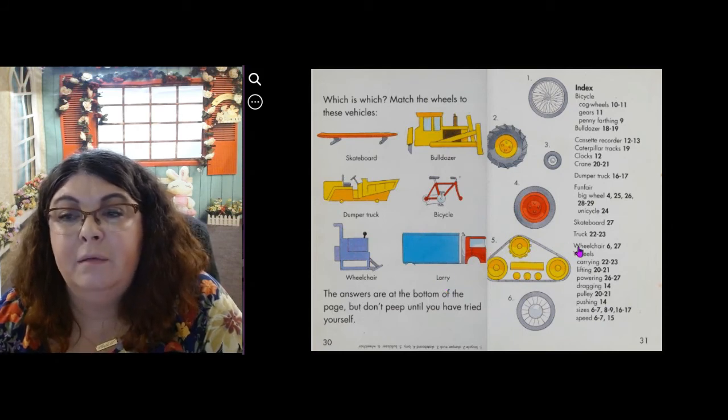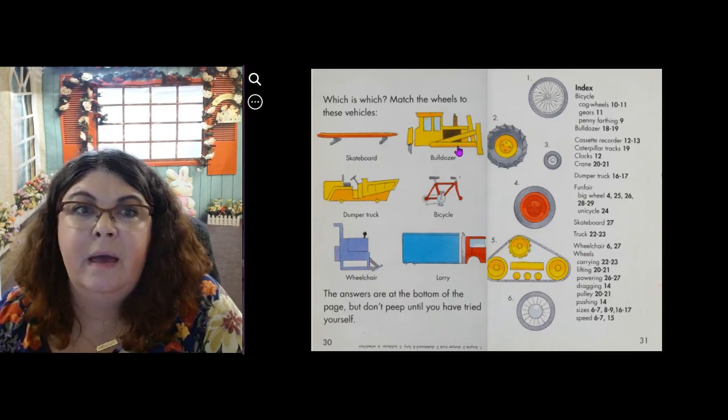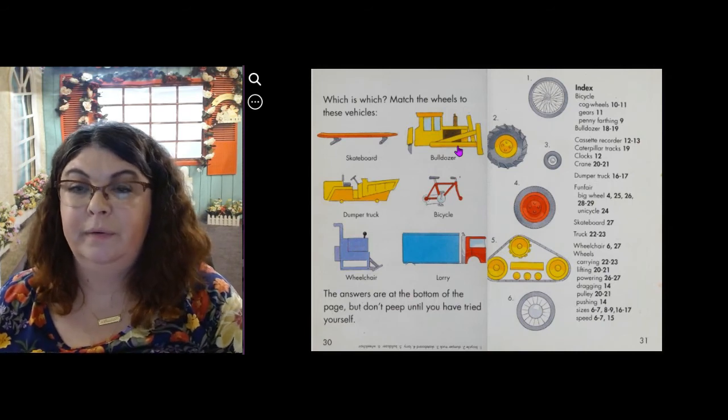How about number five? Remember the caterpillar belt? And it has the wheels inside. Which one goes on that? Yes! The bulldozer! Very good!